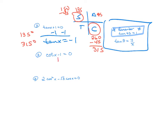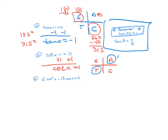Over here, cotangent — remember, that's the reciprocal of tangent. So cotangent of x equals 1. You should remember that is the reference angle of 45. All students take calculus — tangent and cotangent are positive in quadrants 1 and 3. Your reference angle is 45. To get the quadrant 3 angle, do 180 plus 45, which is 225. So the two angles for number 4 are 45 degrees and 225 degrees.